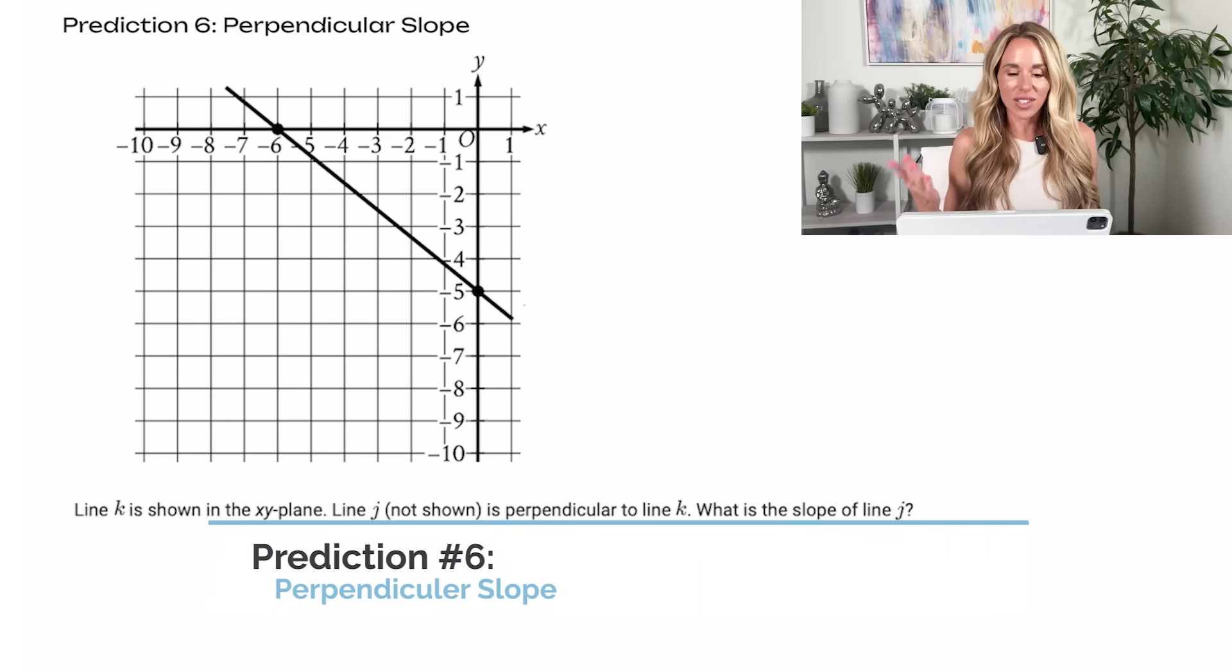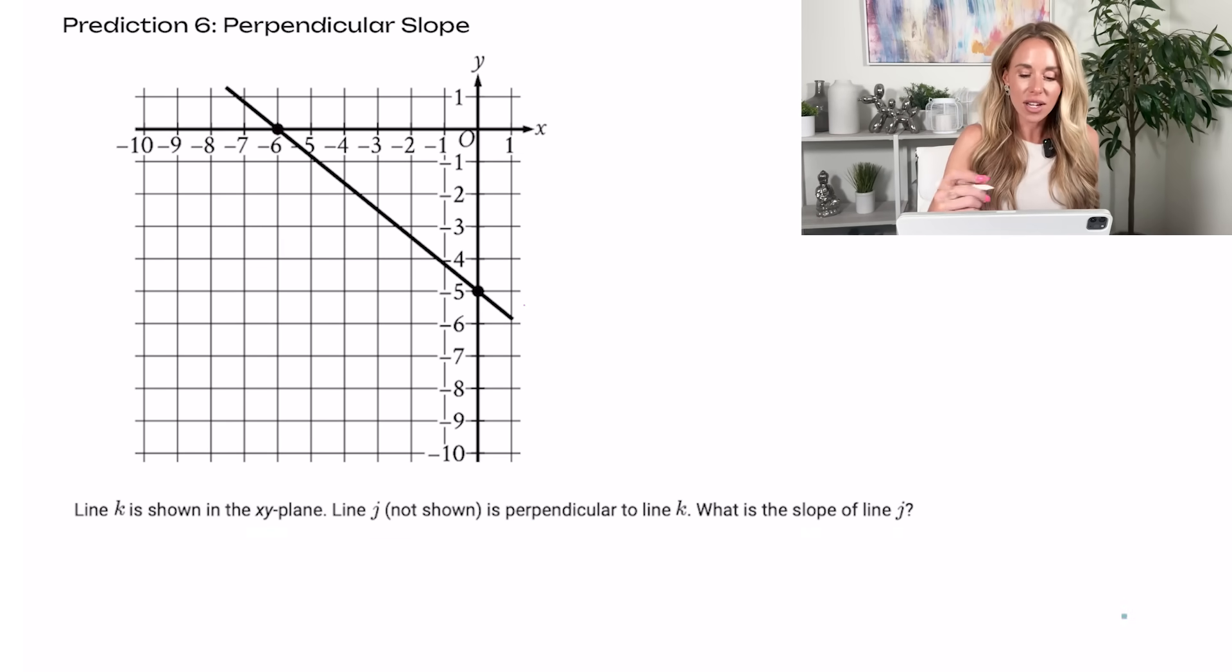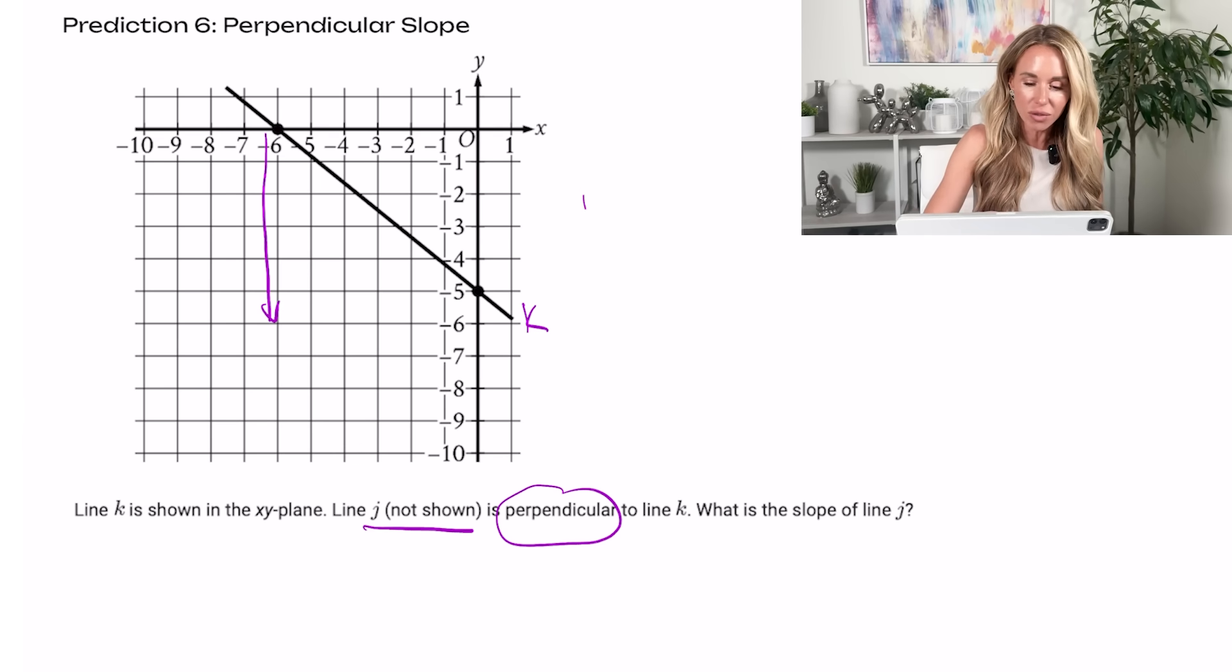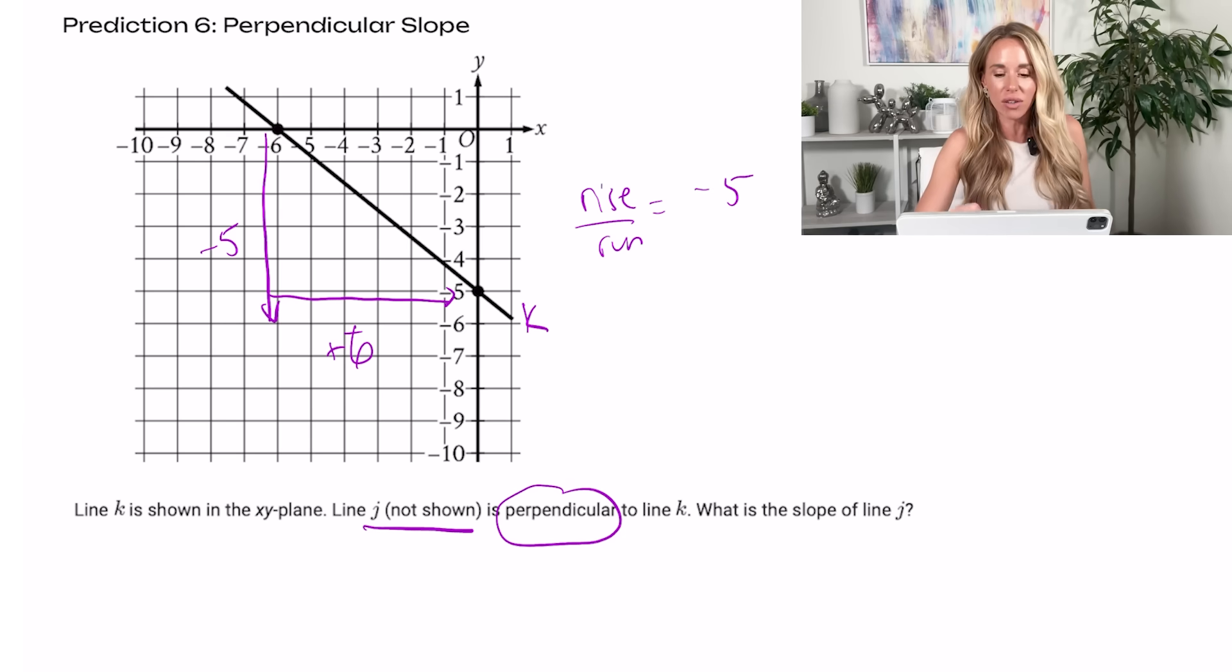Prediction six deals with perpendicular slope. So what's great about these questions is they said that this is line K and then they said line J not shown as perpendicular, but let's figure out the slope to line K. And you can do that simply by putting it into Desmos and running a linear regression. Or what you can do is you can just count down and over. So if I start here and I go down because slope is rise over run. If I go from zero down to it looks like negative five, I'm going down negative five. And then I'm going from negative six to zero. So I'm going over positive six because I'm going to the right. So that means the slope of line K is negative five over six. So J, since it's perpendicular, it's going to be the negative reciprocal. So the answer will be six fifths.